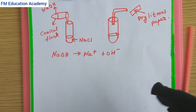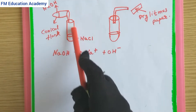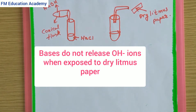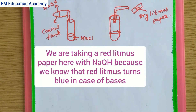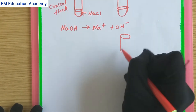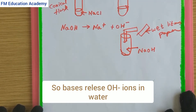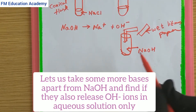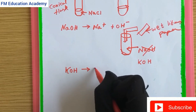In the case of bases, with a dry red litmus paper brought near the delivery tube, we see that the bases are not dissociating and are not giving OH- ions when the paper is dry. We then take a wet litmus paper — since red litmus paper turns blue in the presence of a base — and bring it near the delivery tube. The sodium hydroxide ions dissociate in the presence of water, releasing Na+ ions and OH- ions.